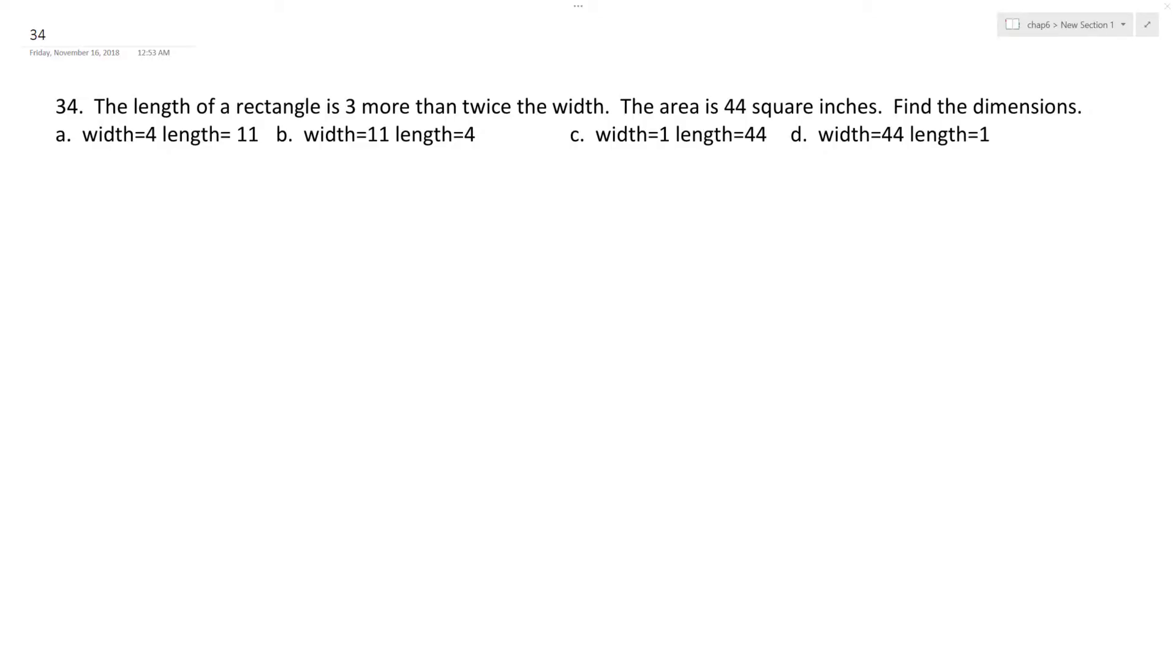All right, so 34. The length of a rectangle is three more than twice its width. All right, so we've got a rectangle here. The length is three more than twice the width. So we'll call the width W, and we'll call the length 2W, and it's three more, so plus three.